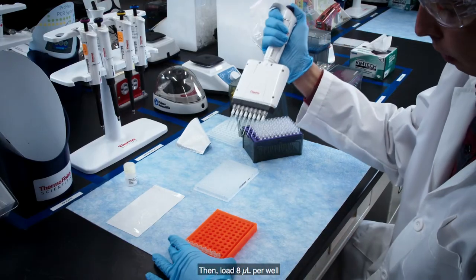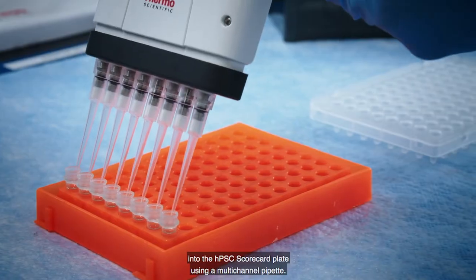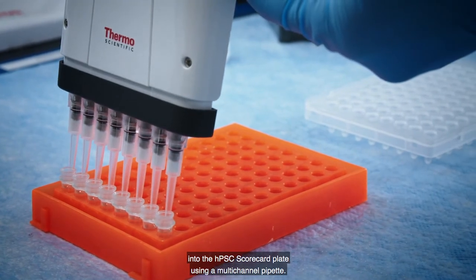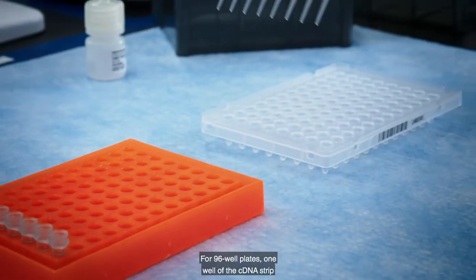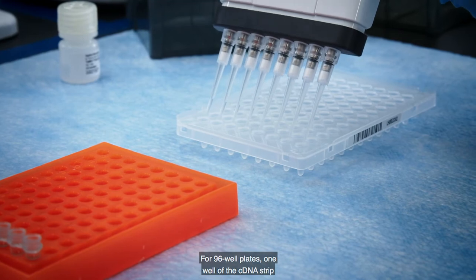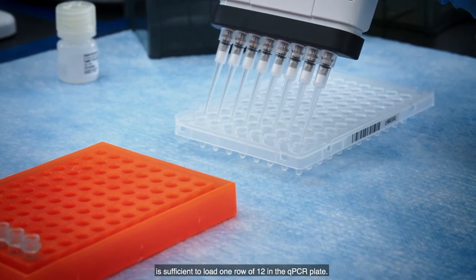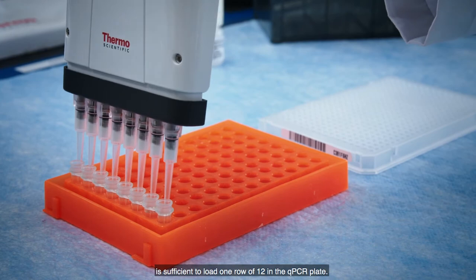Then load 8 microliters per well into the HPSC scorecard plate using a multi-channel pipette. For 96-well plates, one well of the cDNA strip is sufficient to load one row of 12 in the qPCR plate.